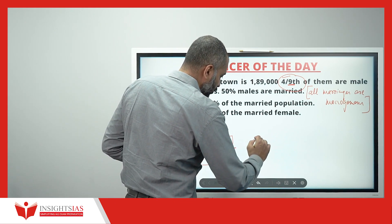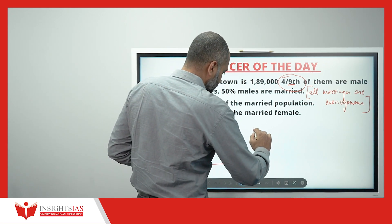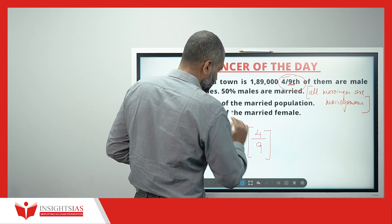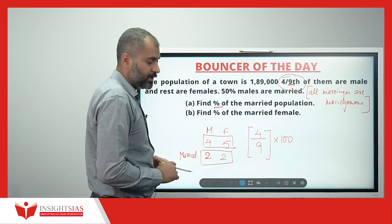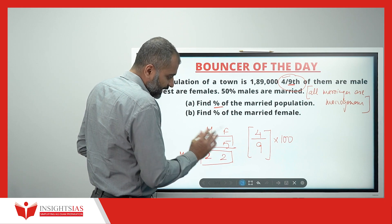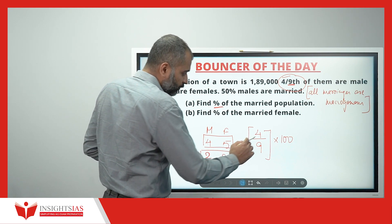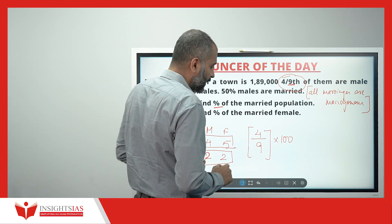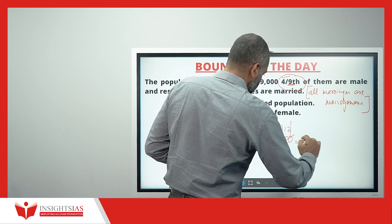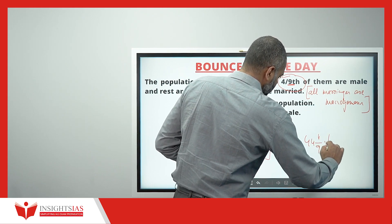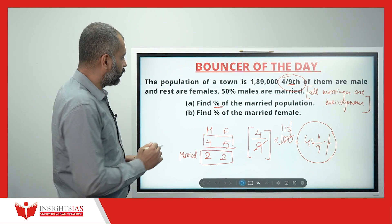Find the percentage of married population. There are 9 people total; out of 9, 4 are married. To convert to percentage, multiply by 100. So 4/9 × 100 = 44 4/9 percent. This is the answer for the first question.